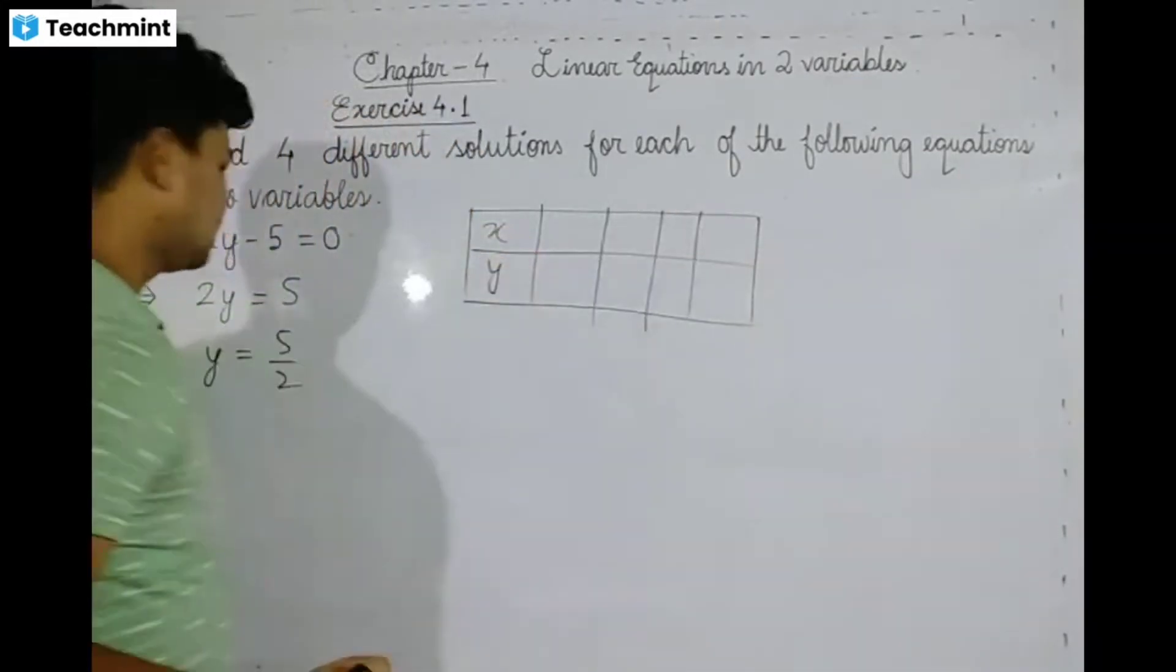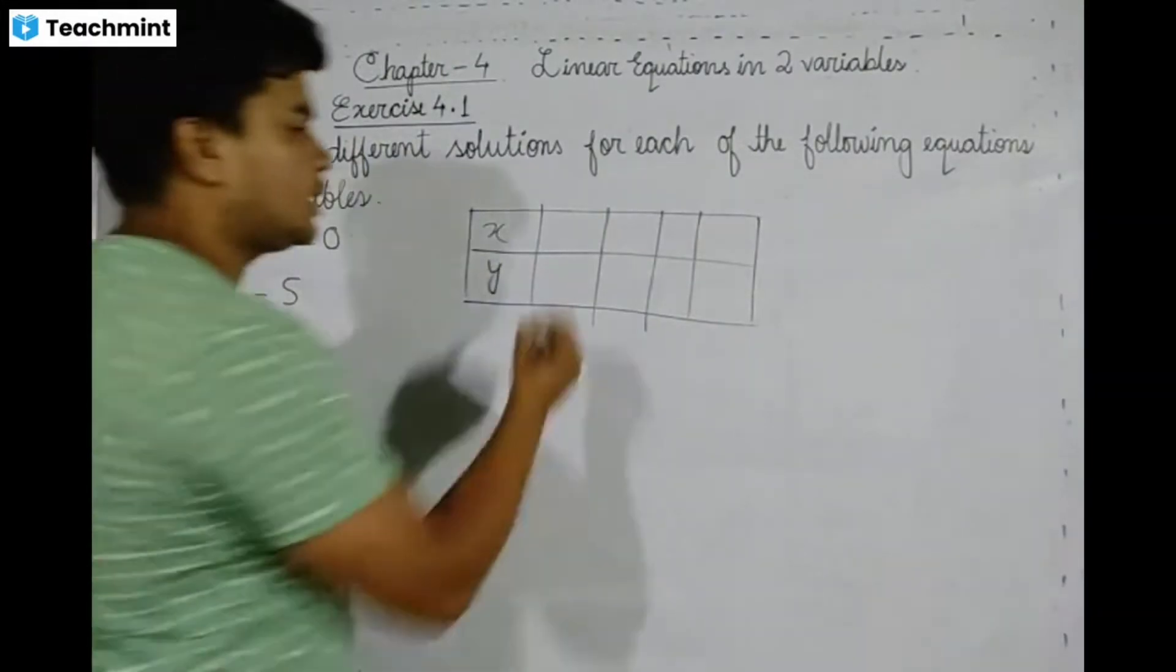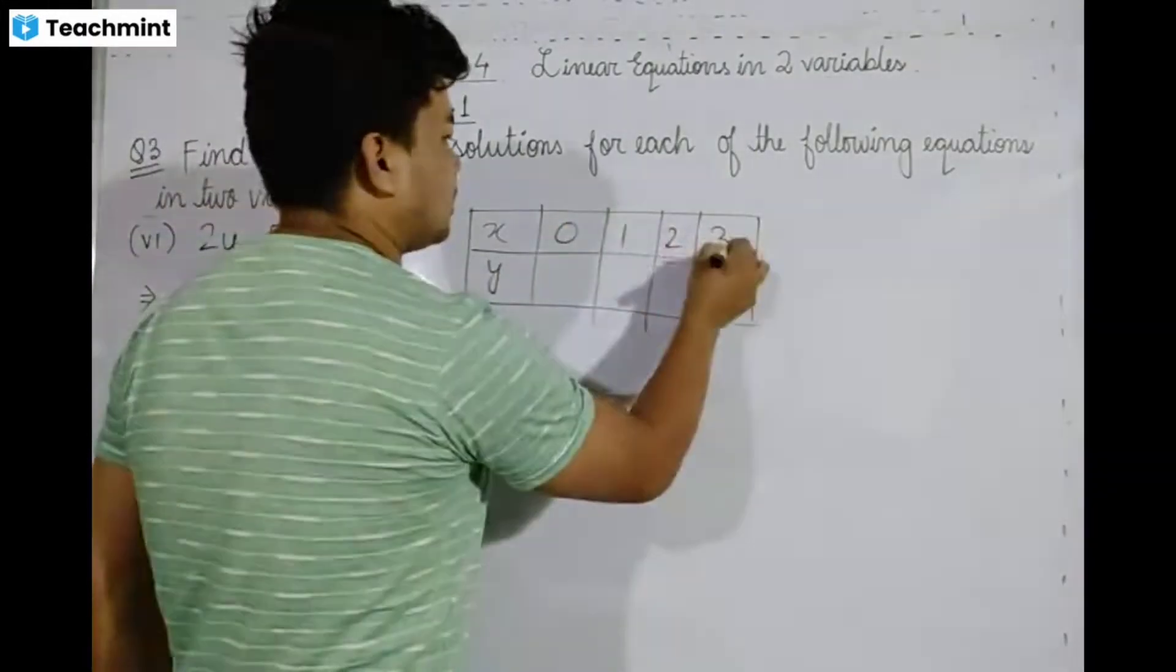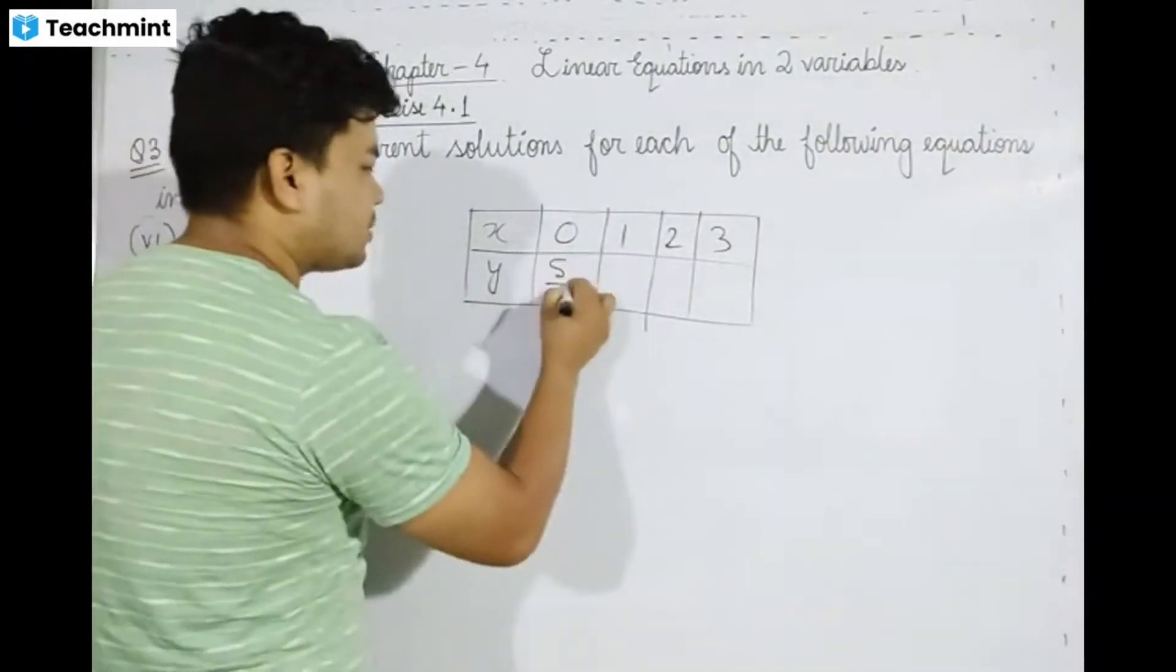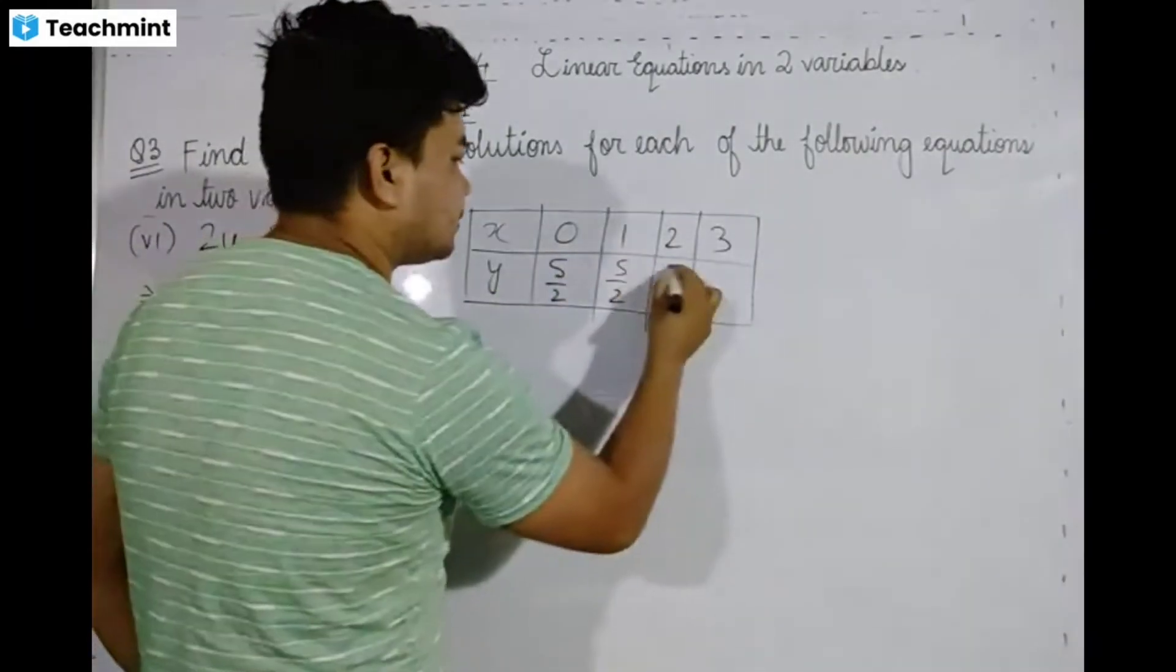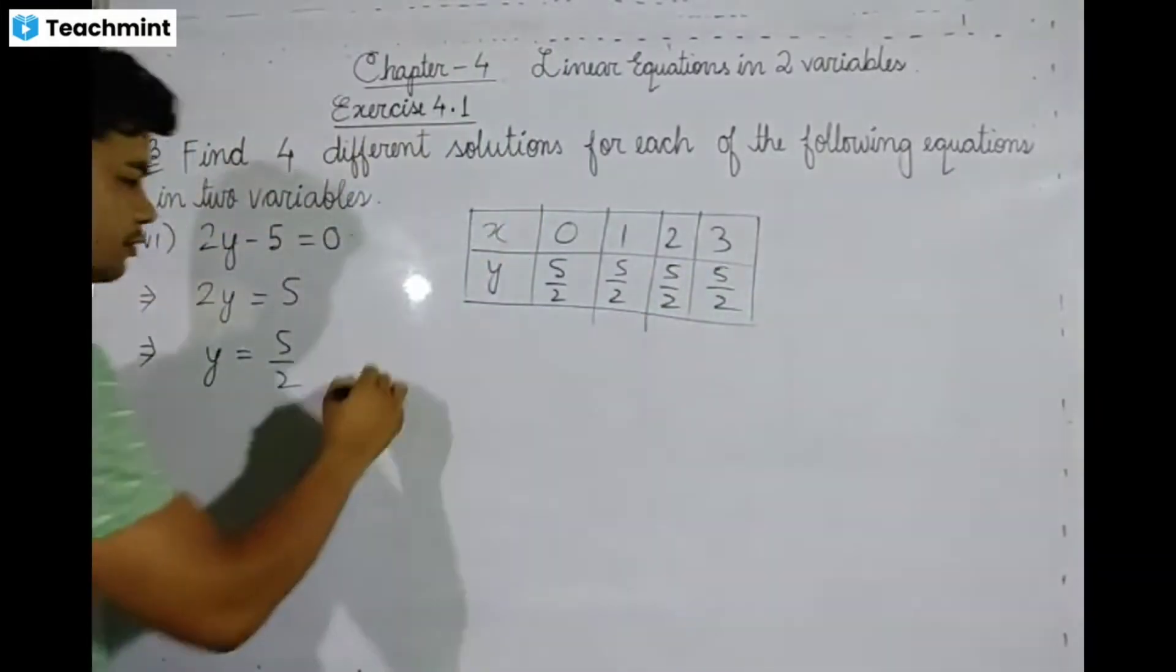For X and Y, y equals five by two. Now we need to determine which x values to use. We need four different solutions, with y always equal to five by two.